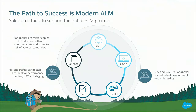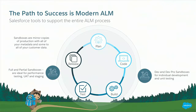Sandboxes come in four flavors: developer, developer pro, partial, and full sandbox. Sandboxes in general are replicas of your production org, but the developer and developer pro sandboxes just copy over the metadata of your production org. Partial and full, as you may know, copy over a subset or all of your production org's data.